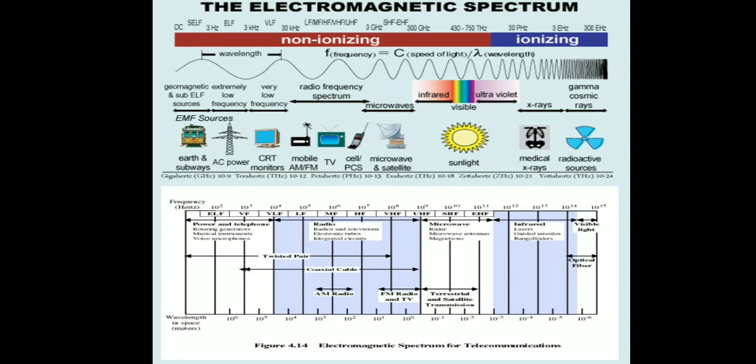For amplitude modulation, we use medium frequency and high frequency bands. For frequency modulation or FM radio communication and TV communication, we use very high frequency or ultra high frequency bands. For terrestrial or satellite communication we use super high frequency and ultra high frequency bands. Then infrared, visible lights, and optical fiber cables.